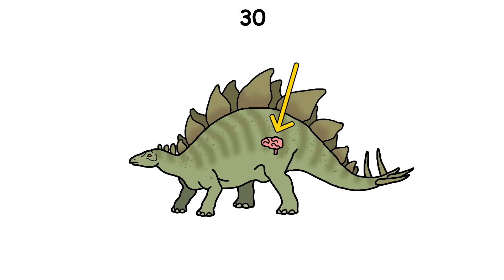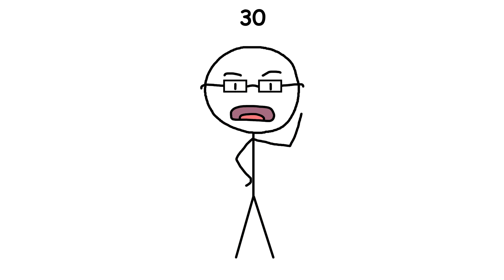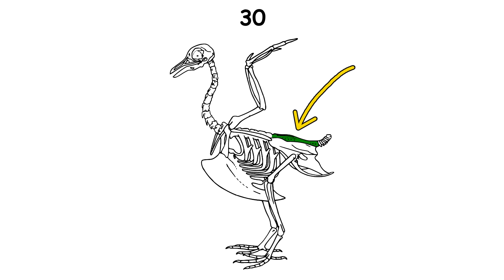For a long time, people believed that Stegosaurus had a second brain in its hips to help control its huge back legs and tail. This idea came from the fact that its actual brain was tiny, about the size of a walnut, which didn't seem enough for such a big animal. But modern science has proven this theory wrong. The space in its hips wasn't for a second brain, but for something called a glycogen body. This organ, which birds also have today, stores energy like a natural battery.